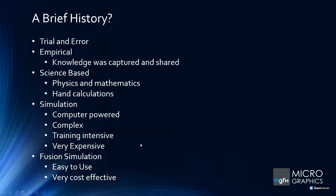Then came Fusion 360 Simulation — very easy to use and very cost-effective. Many simulation packages cost 50,000, 100,000, or 200,000 Rand once you add modules. Whereas Fusion 360 is a CAD package with simulation integrated, running off the NASTRAN solver that Autodesk acquired. You're typically looking at less than 10,000 Rand for both the CAD and the FEA simulation.